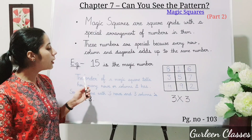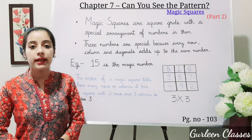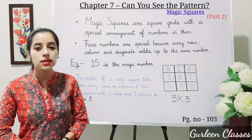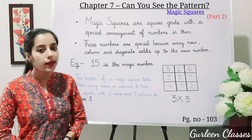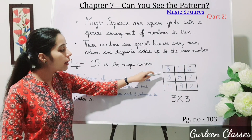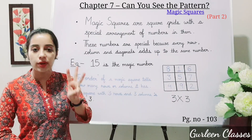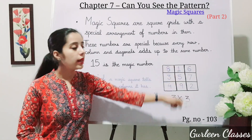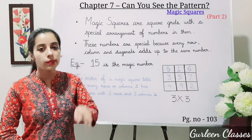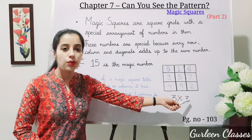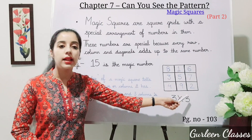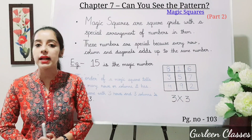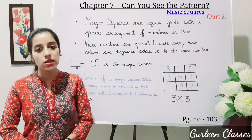The order of Magic Squares tells how many rows or columns it has. How many rows are there? 1, 2, 3 — we have 3 rows. How many columns? 1, 2, 3 — we have 3 columns. So we write it as 3 into 3. A square with 3 rows and 3 columns has order 3.